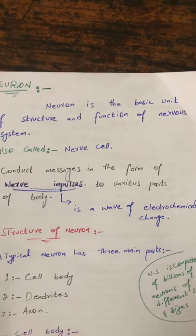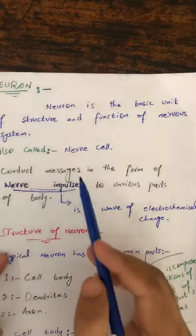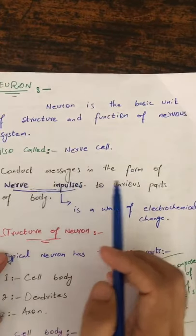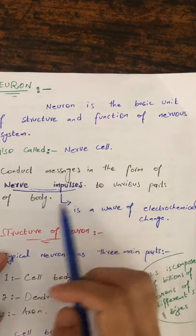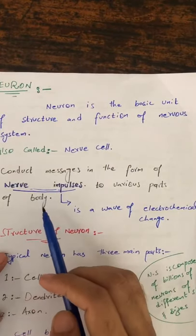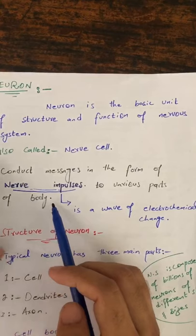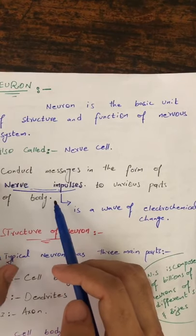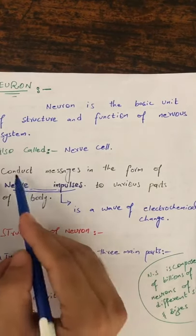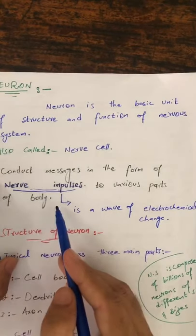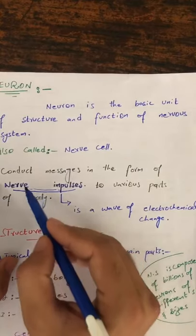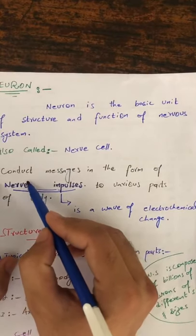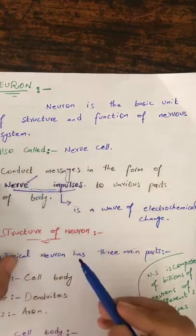What is the function of the neuron? The function is to conduct messages in the form of nerve impulses to various parts of the body.